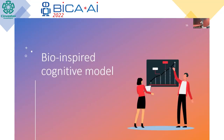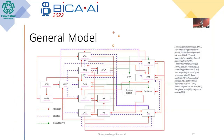For our cognitive model, we use these areas, and in this slide we can see the whole system and all the areas involved in this process. We can also see the neurotransmitters involved, like acetylcholine, dopamine, serotonin, orexin, and GABA.